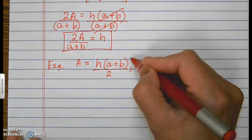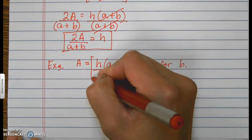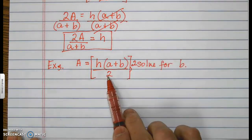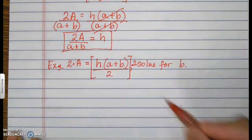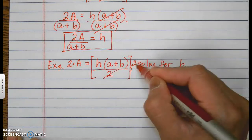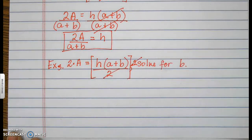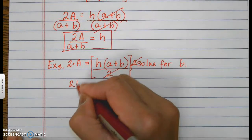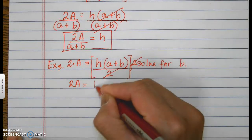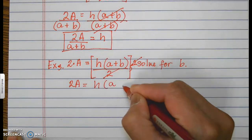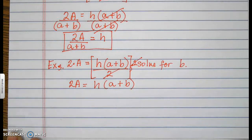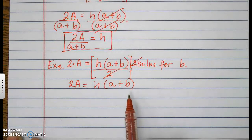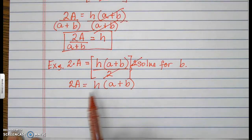Multiply this side by 2 because that's the inverse of divide. Whatever I do on the right, I do on the left. The 2 turns into 1, giving 2A equals h times parentheses a plus b. Now I need to remove h and a so that b can be isolated. The easiest to remove is the one farthest from b, which is h.